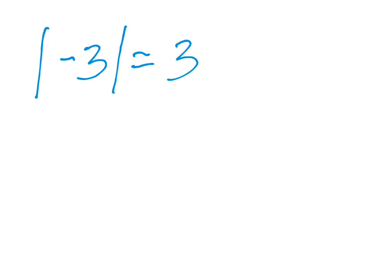Remember, since absolute value is a distance, it is never a negative number — but it can be zero. The absolute value of zero is zero, because zero is zero away from zero. That's actually the only number whose absolute value is not a positive number, since zero is neither negative nor positive. So all absolute values are either positive or zero.